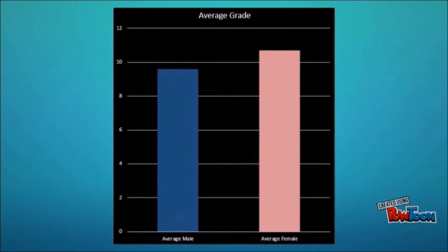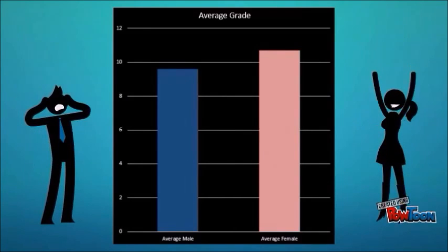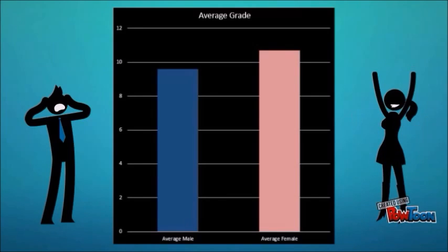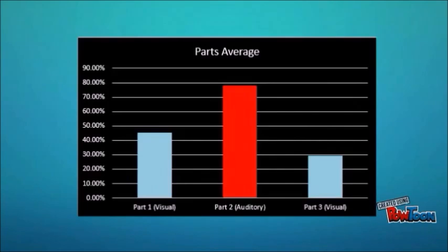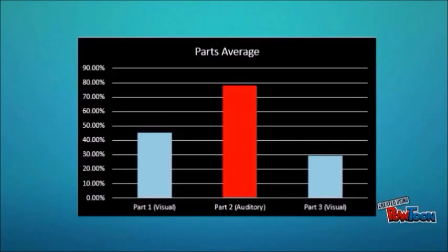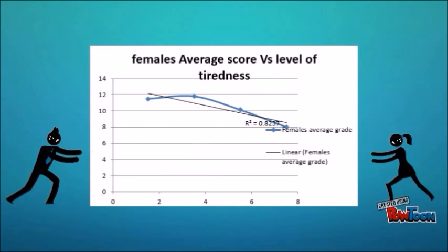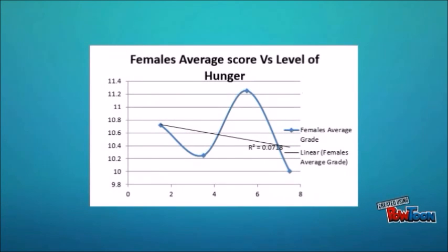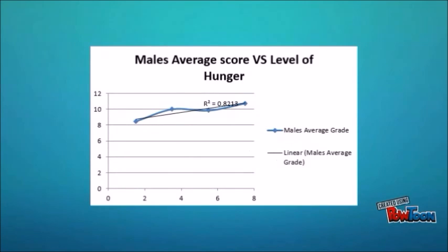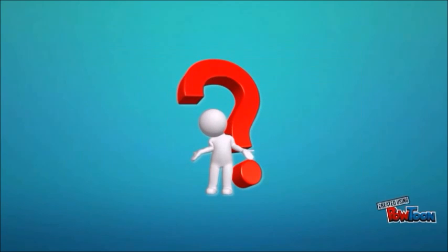We can see that the average score of females is higher, which verifies our hypothesis. We also gathered some interesting additional data. Firstly, the averages for parts 1 and 3 — the visual parts — were much less than part 2, the auditory part, which agrees with the fact that information in auditory registers lasts longer. Secondly, sleep hours don't significantly affect males' performance, but they seem to powerfully affect females — the same applies to level of tiredness. Finally, and most excitingly, hunger level doesn't seem to affect females' performance; however, the more hungry a male is, the better his performance. Could it be that male performance increases with hunger, or are males not being honest about their status, or is the sample simply too small? These findings will definitely need further research.